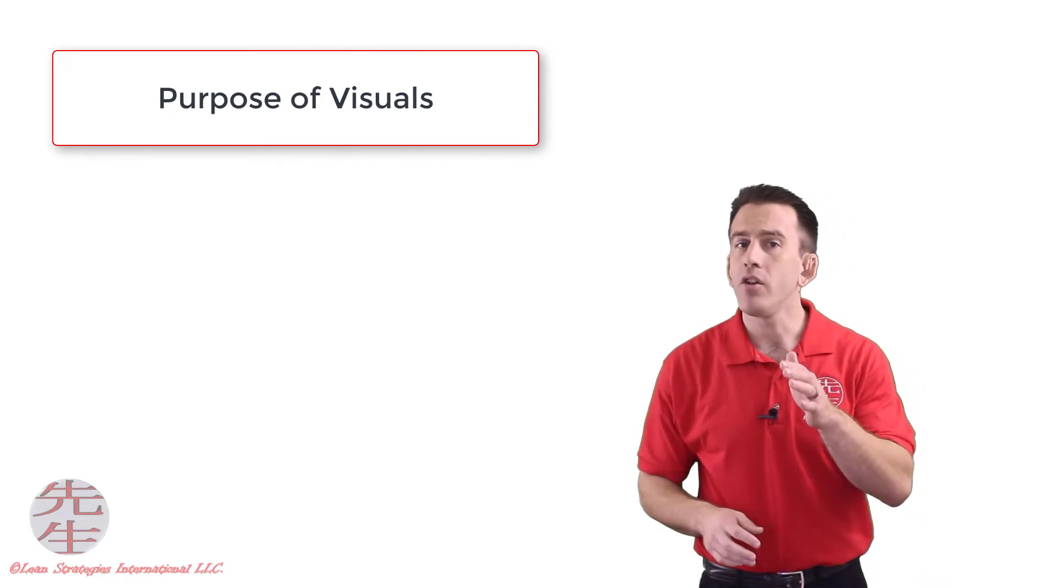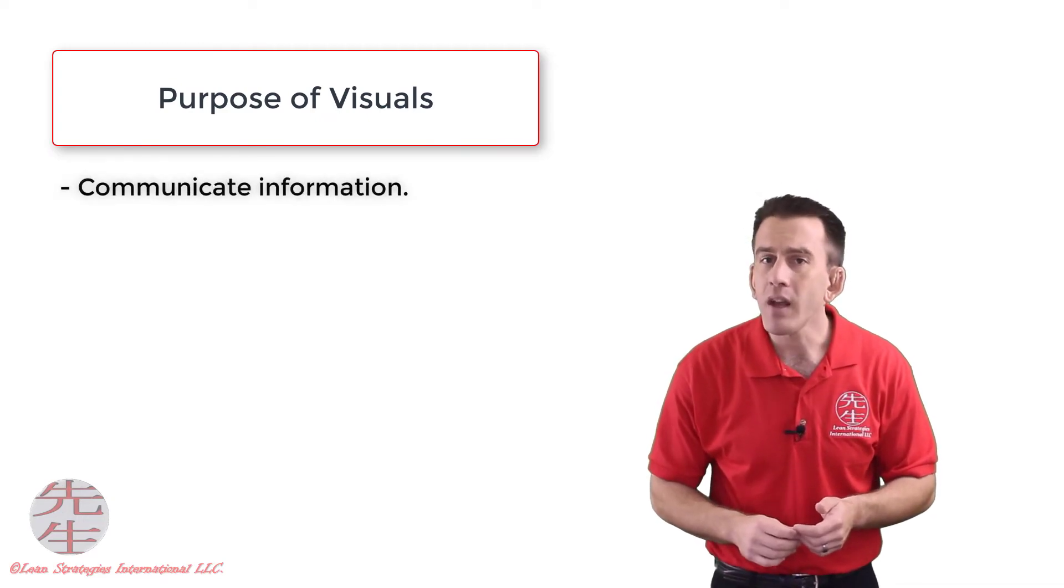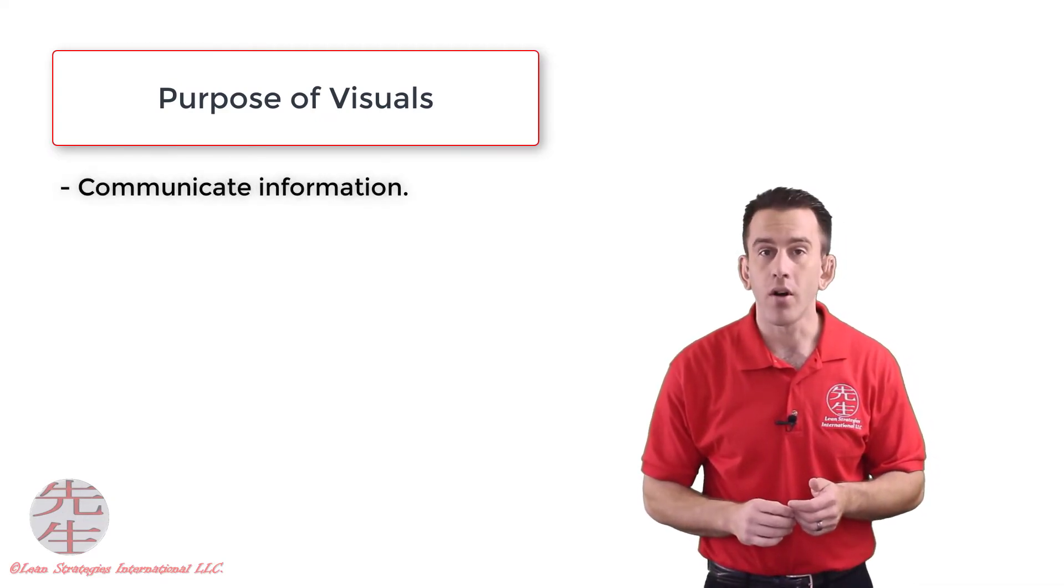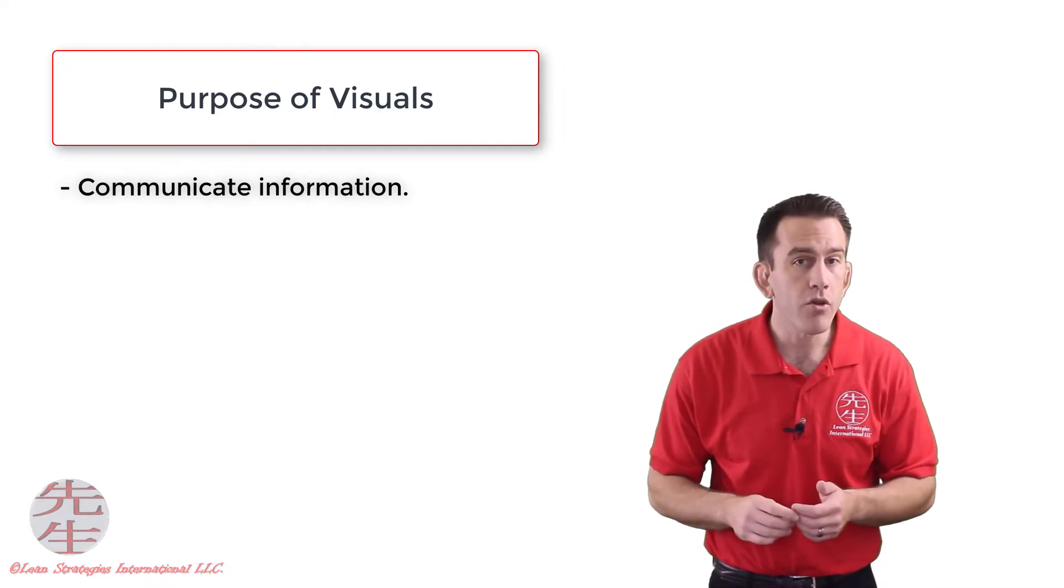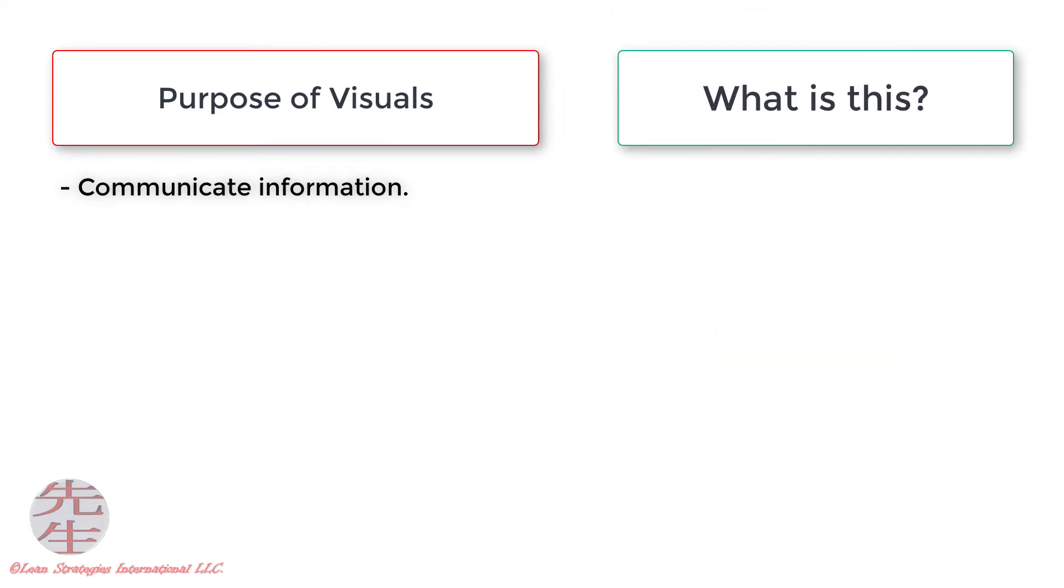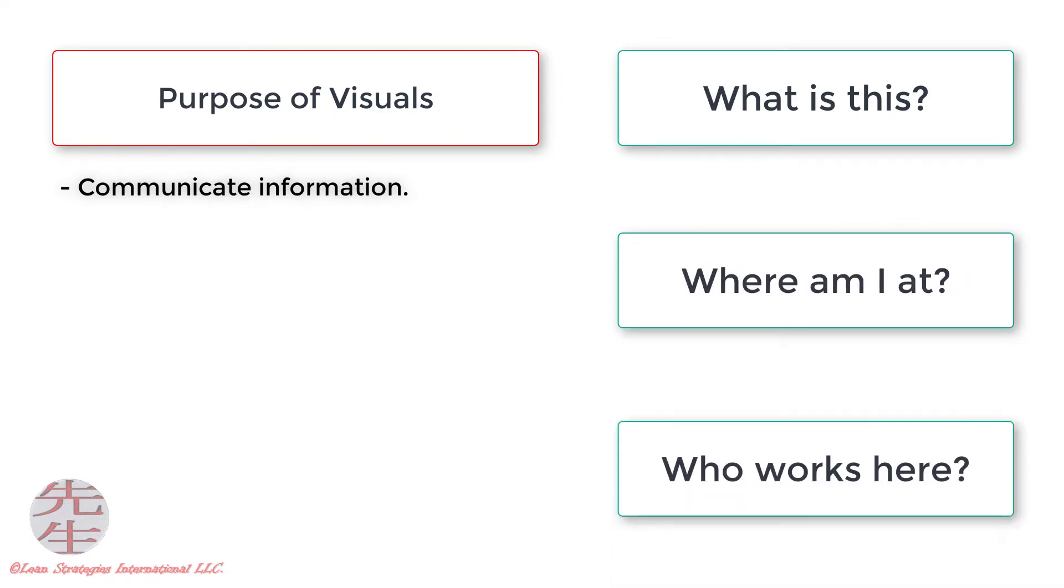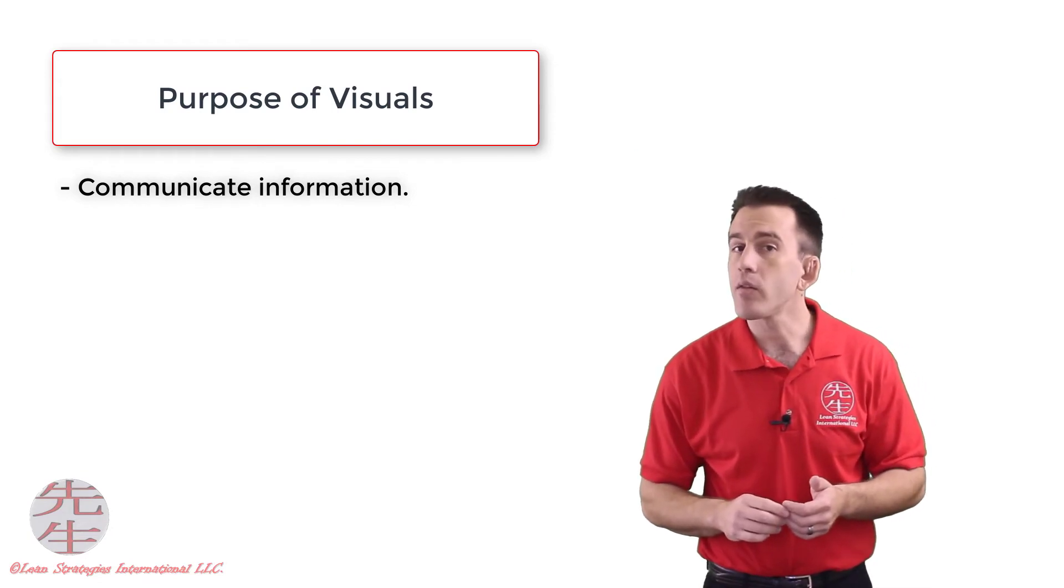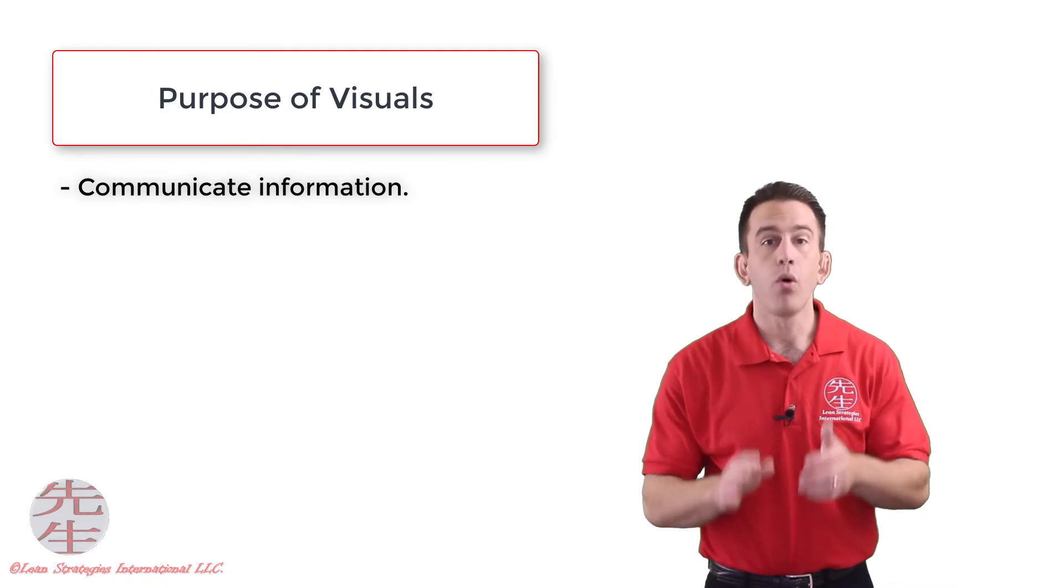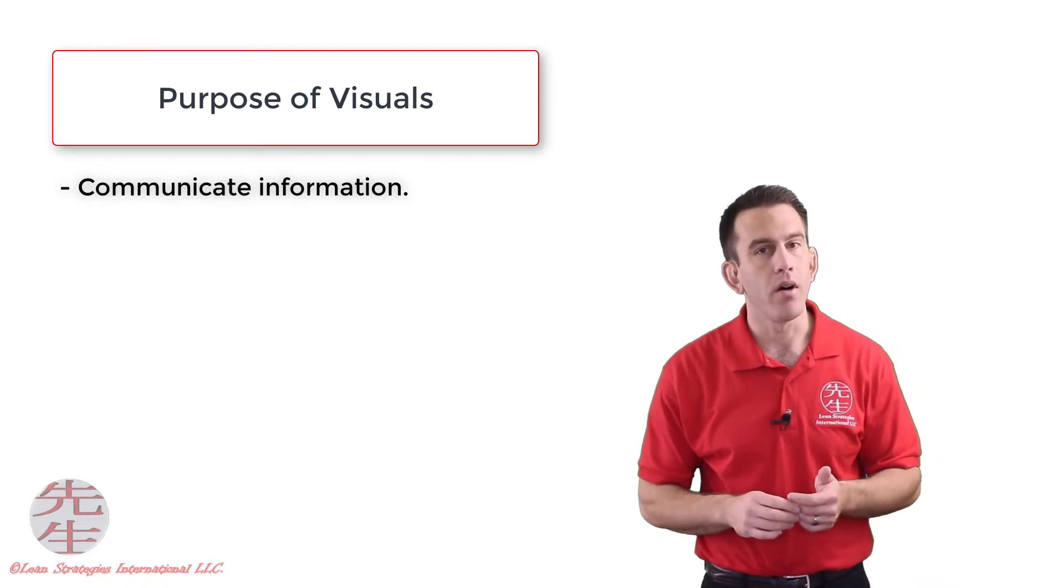The first reason an organization would use a visual management system is to communicate information to workers. These types of visual management might answer questions like: What is this? Where am I at? Or who works in this area? These visual management systems do not necessarily control activities, rather they manage or relay pieces of information to workers.